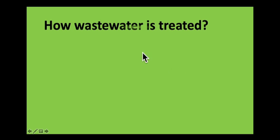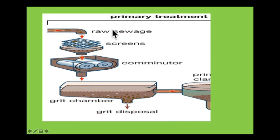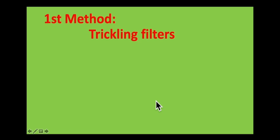Let's discuss how wastewater or sewage is treated. In the primary treatment or first step, raw sewage is passed through screens. These trap large objects such as grit washed off roads and large gravels. The screened liquid is then left for a while in settlement tanks, where any insoluble particles drift to the bottom and form a sediment. There are two different ways in which the resulting liquid can be treated: the first method is the trickling filter, and the second method is activated sludge.